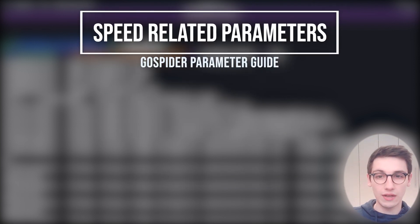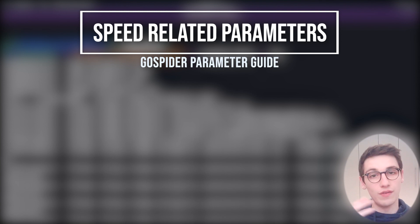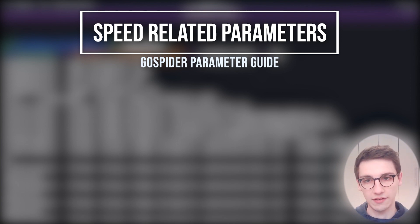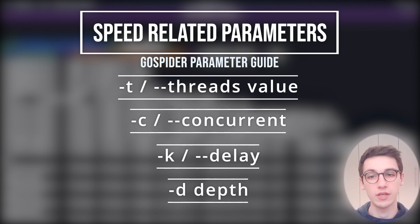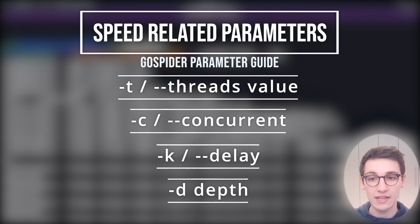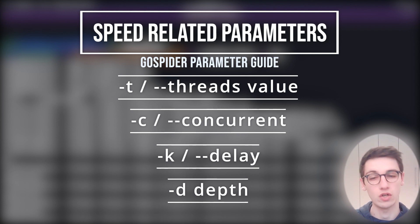Next up we also have to talk about speed. This tool can make a lot of requests and go very fast, but you have to make sure you adhere to the rules of the program you're hacking and don't exceed the request-per-second threshold. You can set the number of threads with "-t" or "--threads", concurrency with "-c" or "--concurrent", and the delay between new requests with "-k" or "--delay".